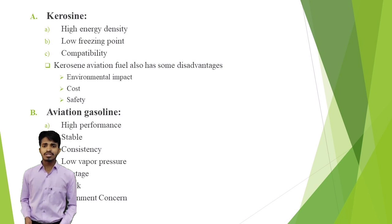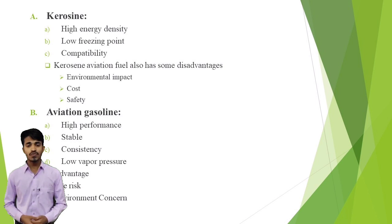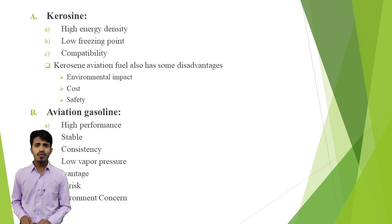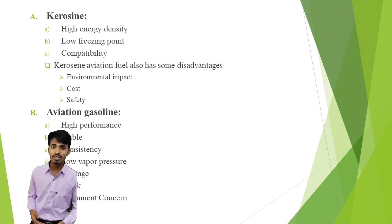Aviation gasoline has several disadvantages. Environmental concern: aviation gasoline combustion releases harmful pollutants such as lead and carbon monoxide into the atmosphere. It is more expensive than other types of gasoline due to its specialised composition and lower production volume. Aviation gasoline has limited availability as it is not readily available at all airports, which can limit the range of piston engine aircraft. It also has a higher risk because it is highly flammable, increasing the risk of fire in case of an accident or spillage.